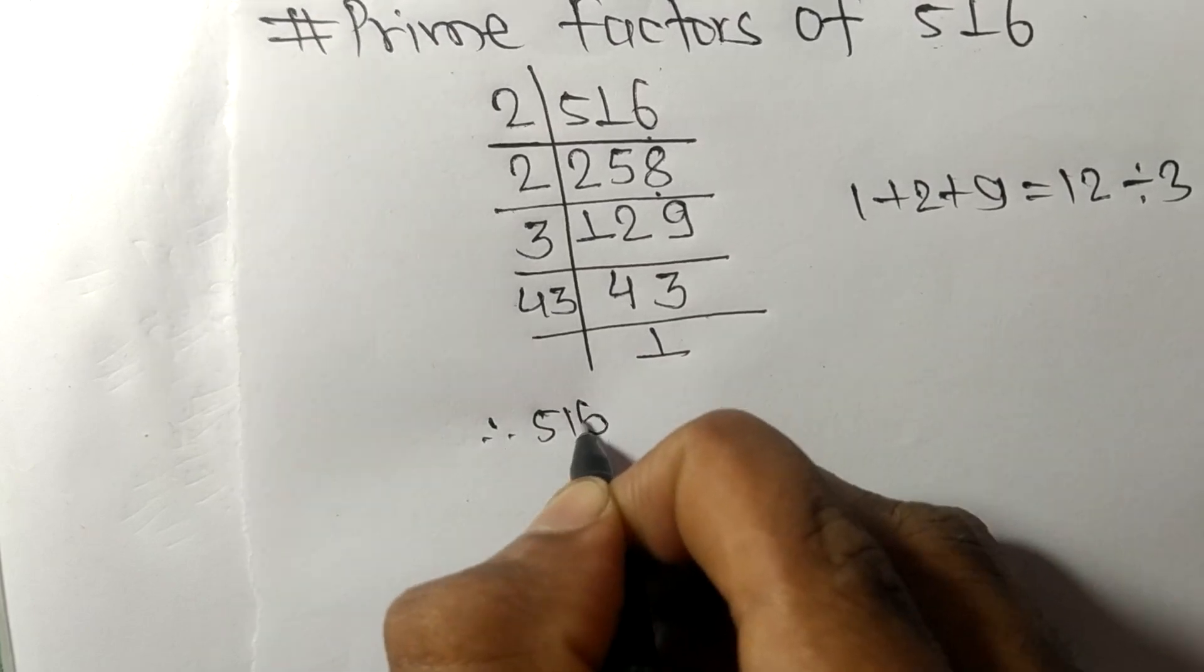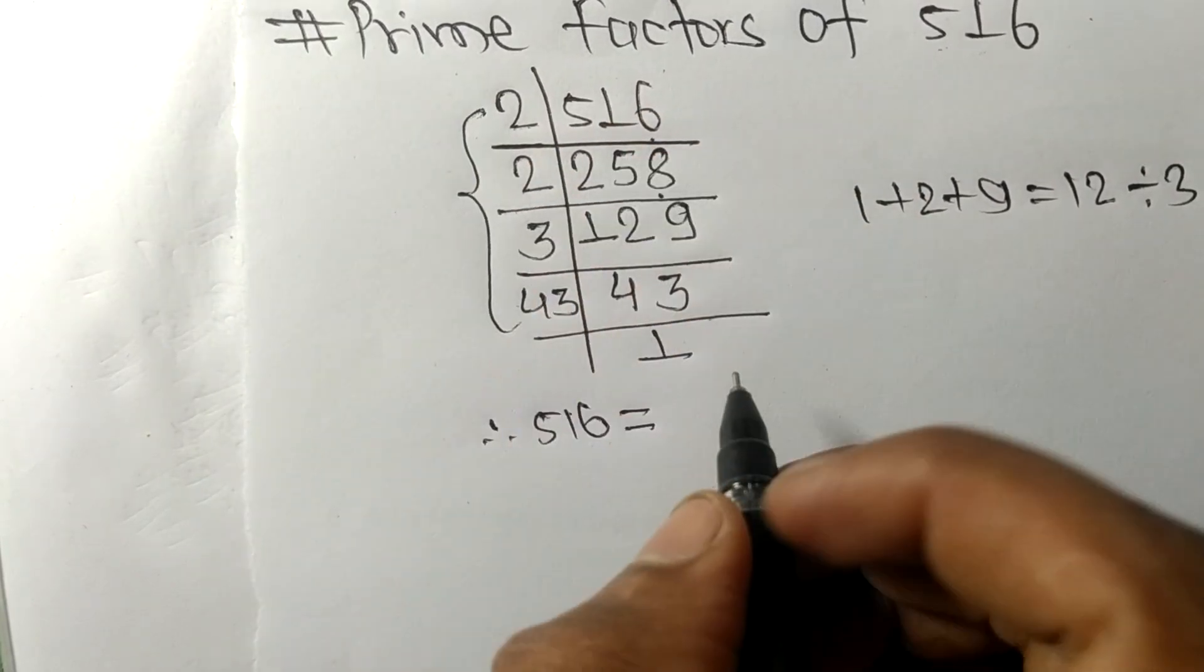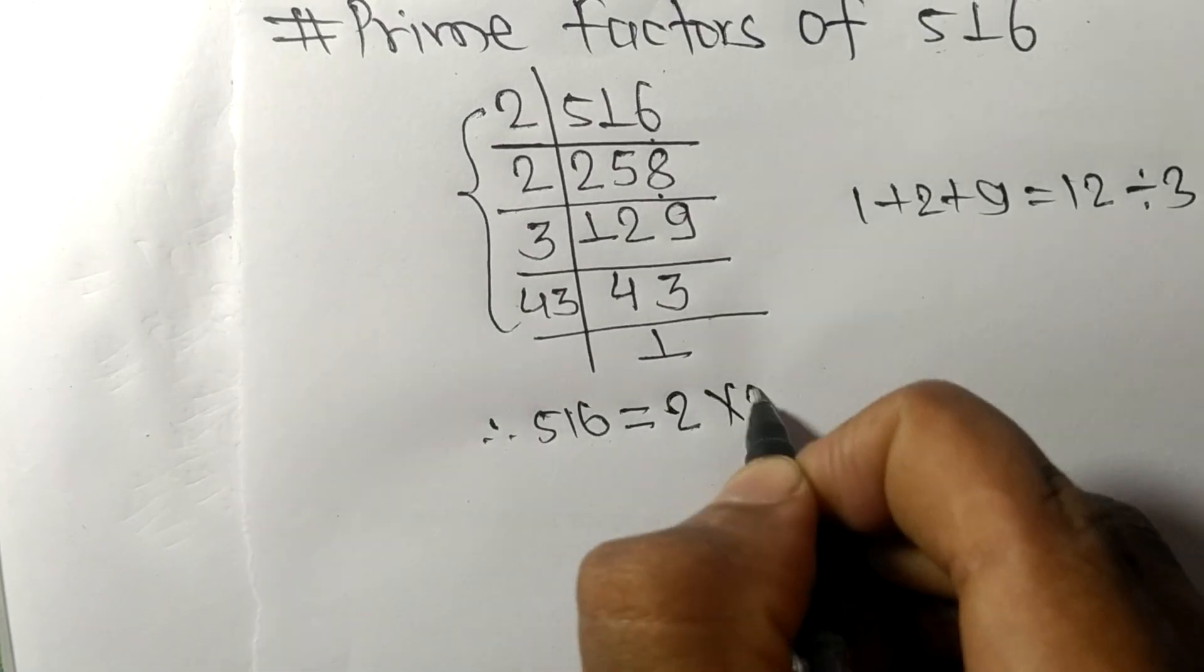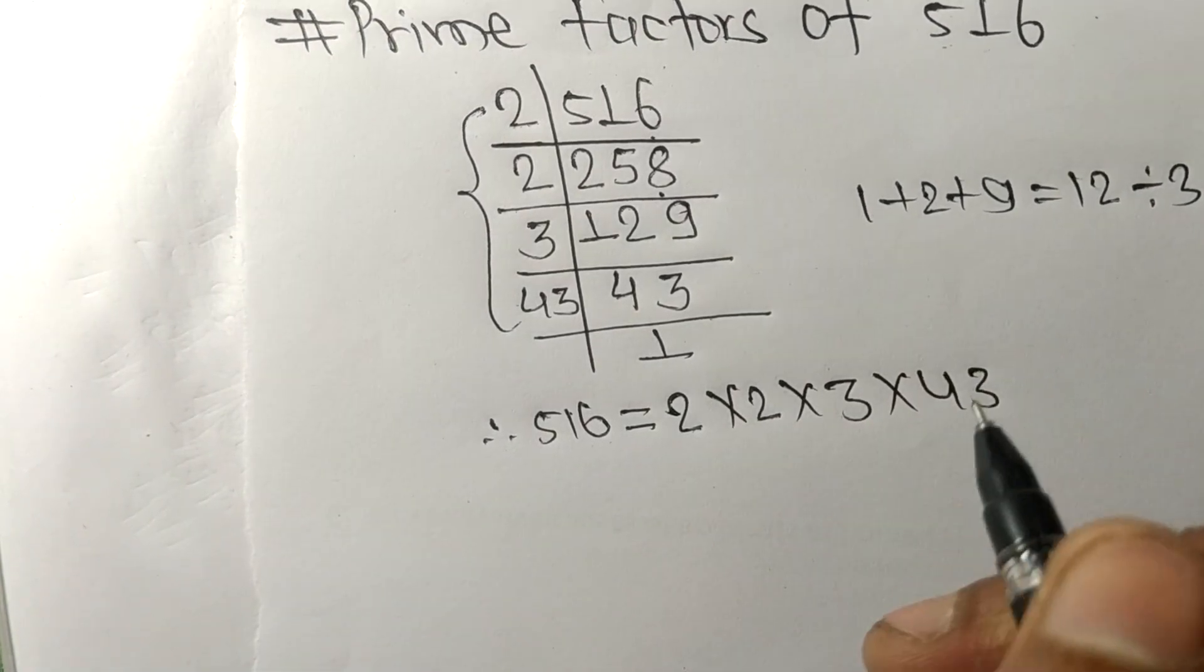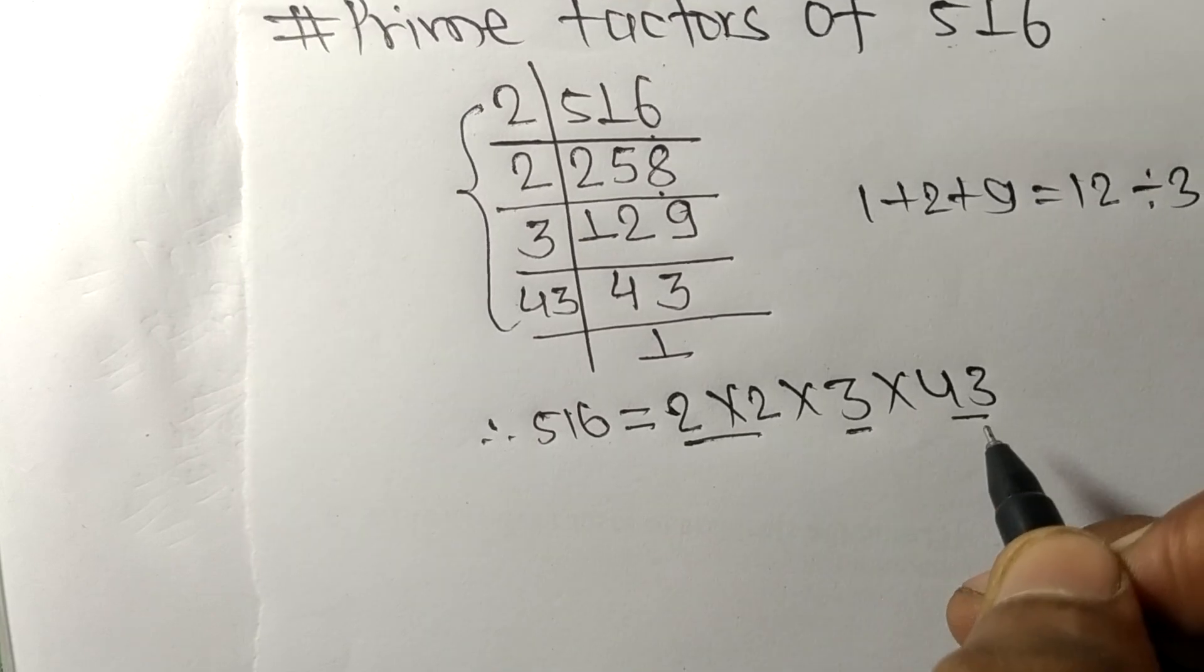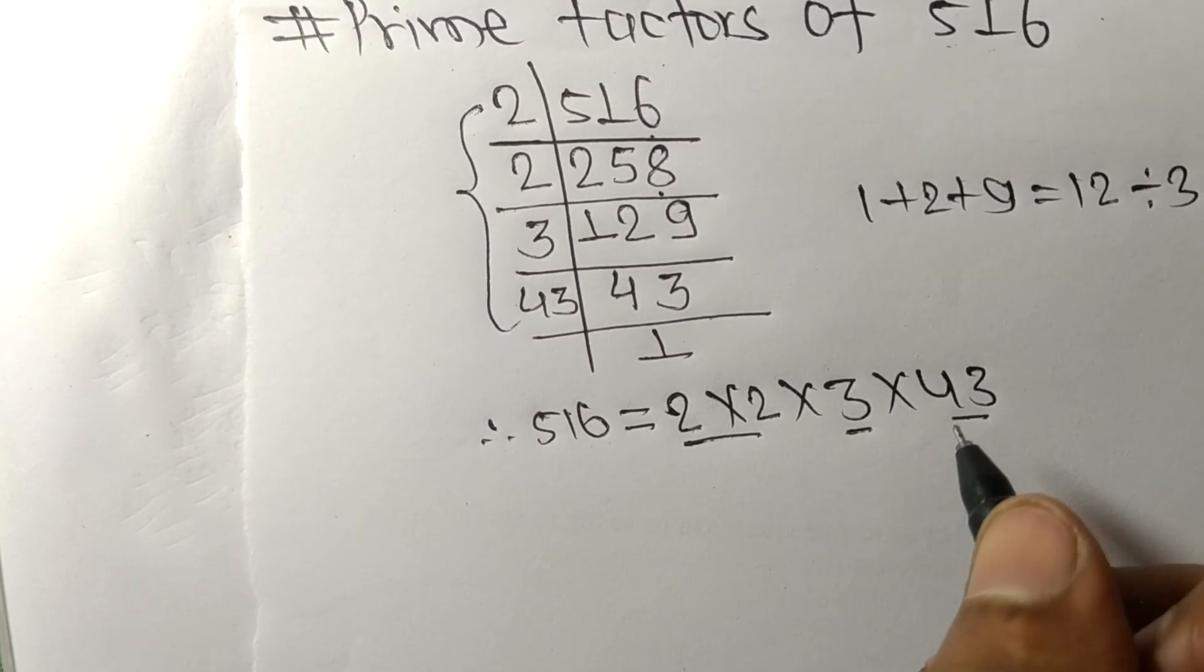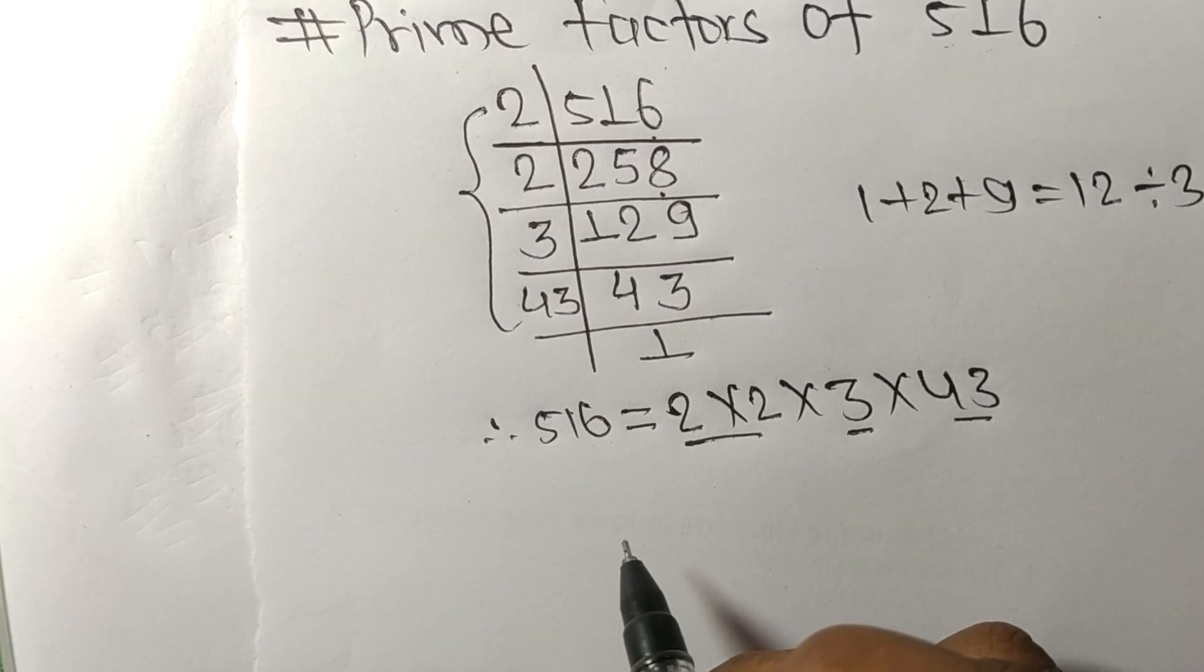Therefore, 516 equals 2 times 2 times 3 times 43. So 2, 3, and 43 are the prime factors of 516. This much for today, and thanks for watching.